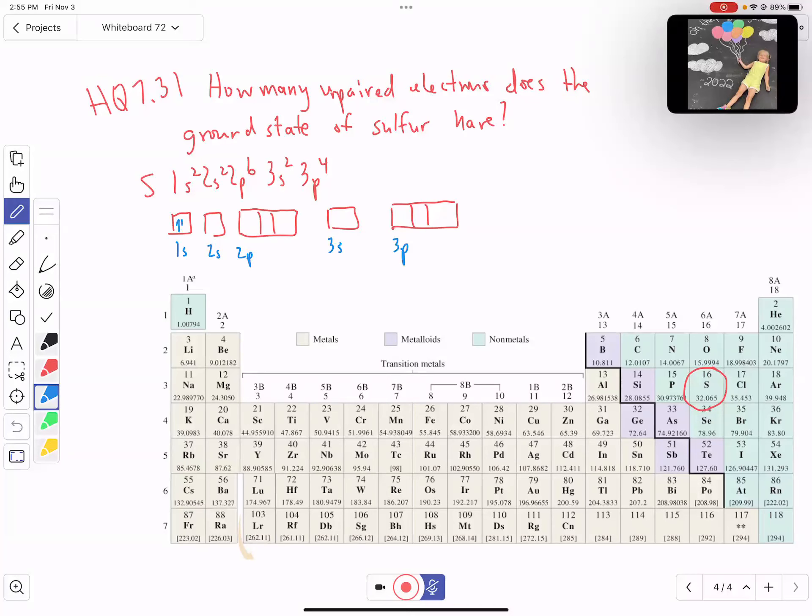I've got one, two electrons there, one, two electrons there. I've got six electrons here in my 2p orbital, two electrons in my 3s orbital. And then for 3p, I've got one, two, three, and then four.